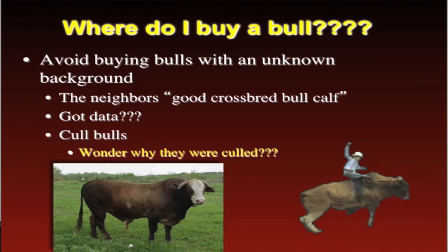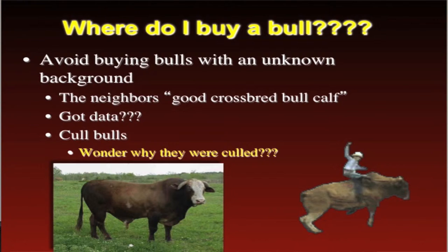What I try to visit with ranchers about is: avoid buying bulls with an unknown background. That may be a neighbor's good crossbred bull calf where you don't have any background on that animal — what is the predicted performance, what does the EPD look like, and are there disease or fertility issues as well? It could be from a producer or breeder that doesn't collect data. Data is extremely important, and we're going to talk a lot about that over the next lecture or two.